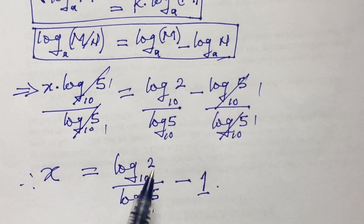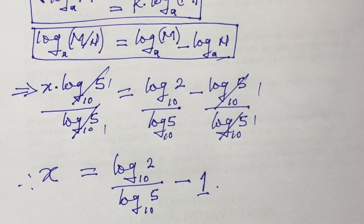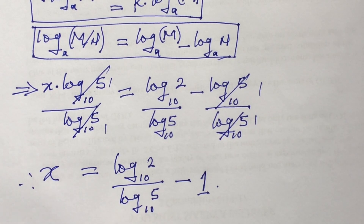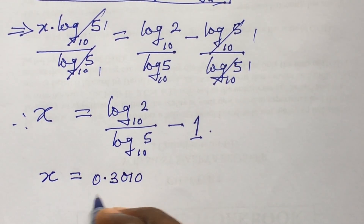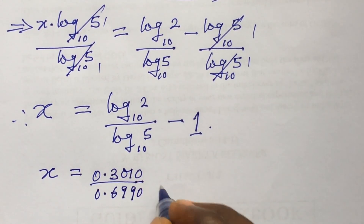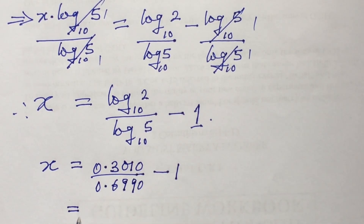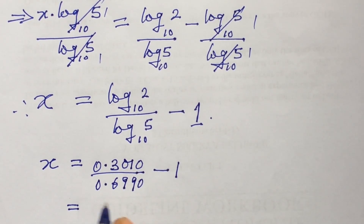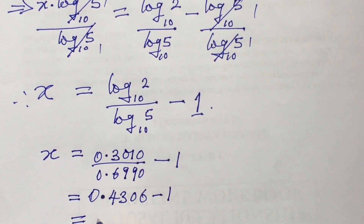So the final answer for x is: x equals log base 10 of 2, all over log base 10 of 5, minus 1. We can also use a calculator to simplify this. Log 2 gives us 0.3010 and log 5 gives us 0.6990, minus 1. Dividing 0.3010 by 0.6990 gives us approximately 0.4306.